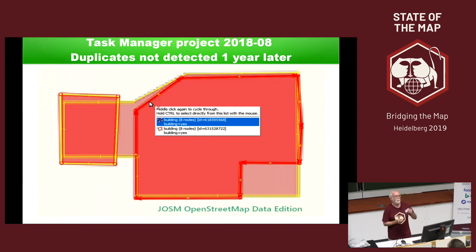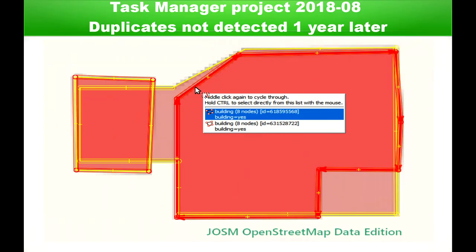In JOSM you can click on any polygon and see the information. You see that there are even duplicates — people are not only overlapping buildings but also creating duplicates. There are a lot of problems like that.